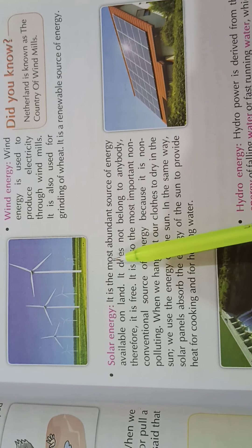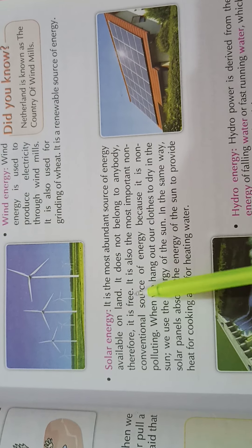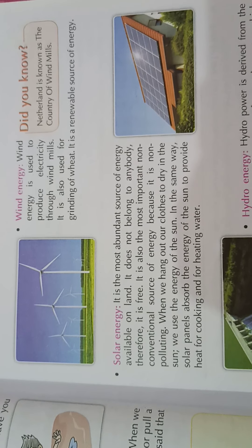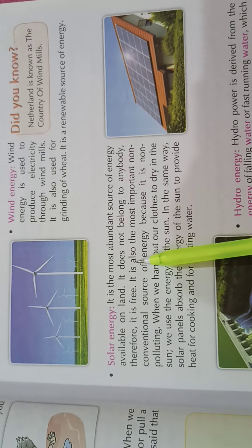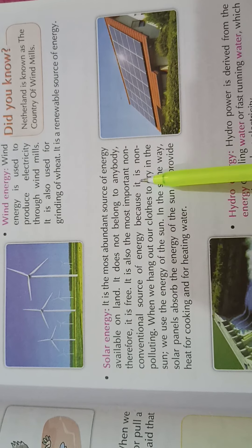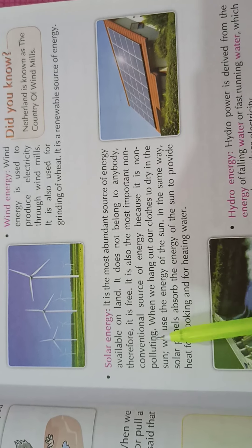Solar energy is present on our planet and can never be finished. It does not belong to anybody, therefore it is free. Solar energy or sunlight doesn't belong to anyone. It is free for everyone. It is also the most important non-conventional source of energy because it causes no pollution.